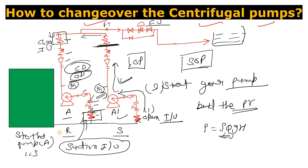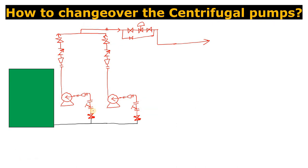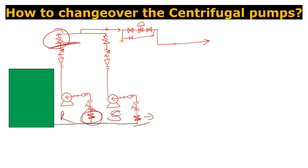At the time of startup, the procedure is the same. Open the suction IV first — the discharge IV stays closed — allow the solution to fill up to the pump, then start the pump, and slowly open the discharge IV. This applies to both pumps. Since there is a flow control valve (FV) downstream, how much solution is sent depends on the DCS operator who will manage the flow accordingly.